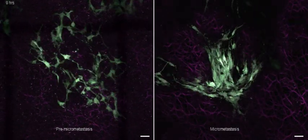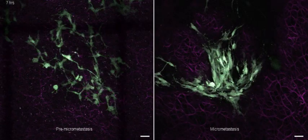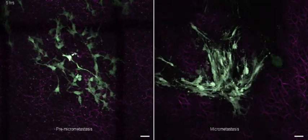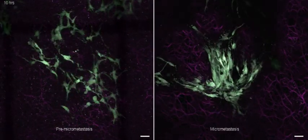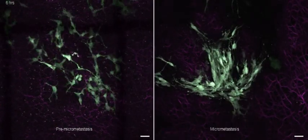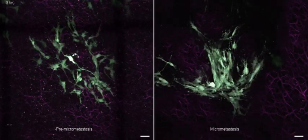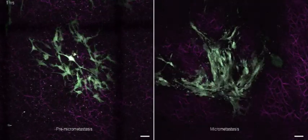On the left-hand side, you see a pre-micrometastasis. On the right-hand side, you see a micrometastasis. What we did is we injected fluorescent colorectal tumor cells. They arrive in the liver, and the left-hand side, you see a three-days-old pre-micrometastasis. On the right-hand side, a five- to six-day-old micrometastasis.